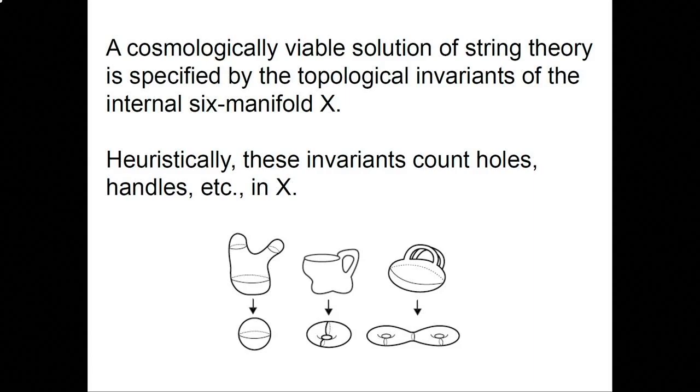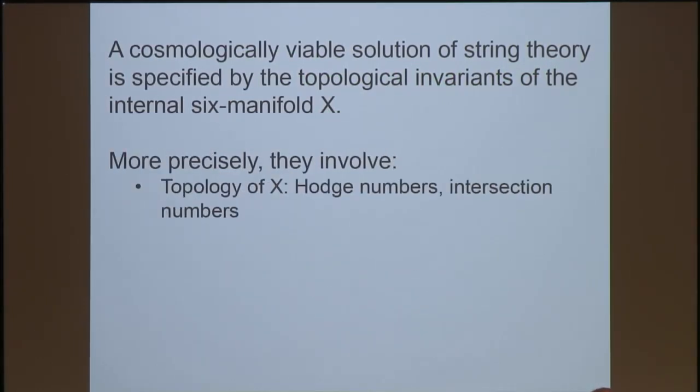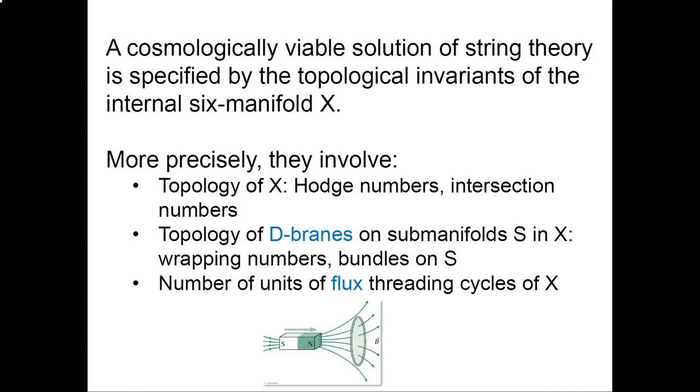So, what this brings us to is that a cosmologically viable solution of string theory is specified by the topological invariants of the internal six manifold. Were you including fluxes in your topological invariants? Next slide. Yes. Thank you. Right. So, I should have really said associated to here, and as you know perfectly well, it is true that they're specified by topological invariants associated to the six manifold. On this slide, heuristically, they count holes and handles in X, but really, they involve first of all, the topology of X like Hodge numbers of X, the six manifold, its intersection numbers, but also stuff you can put on X. The topology of extended objects with some tension called D-branes on sub-manifolds in X. What kind of D-branes depends on which kind of string theory you're describing, but you'll always be putting them on sub-manifolds.